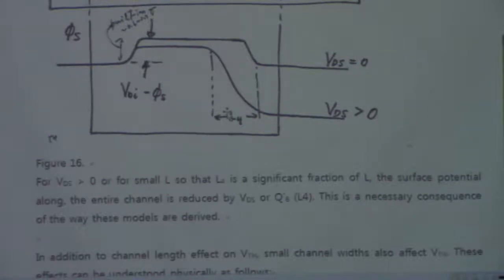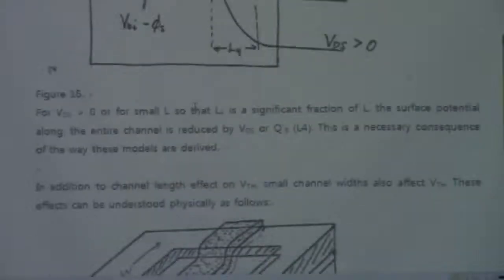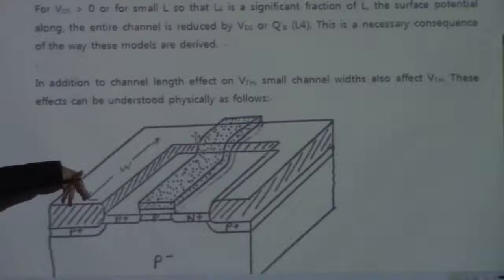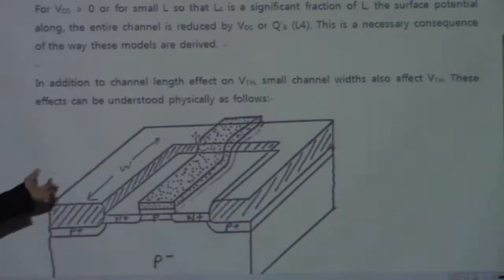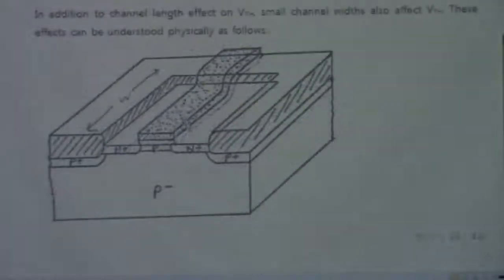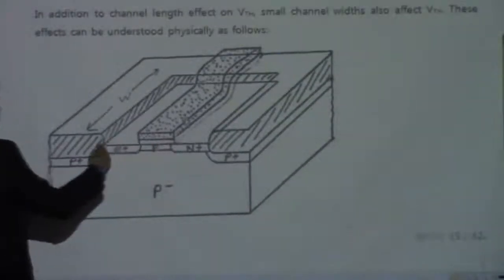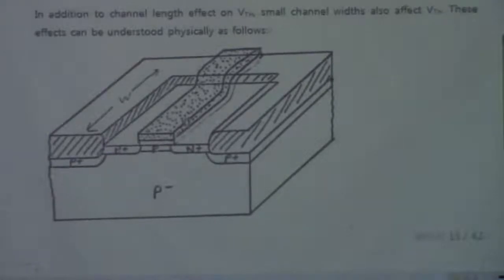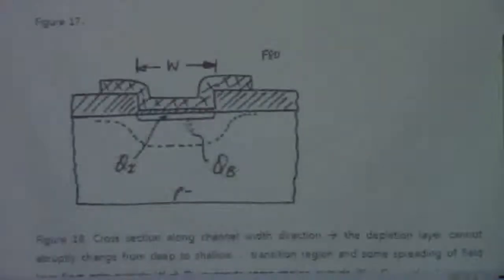We just skip the drain voltage-induced barrier lowering for now. So far, we have taken length into account for threshold voltage determination. Now, what about the width? If you want to think about the width effect, it becomes a little more complicated. Looking at the device, L is the channel length — from here to here — but W is the width — from here to here.